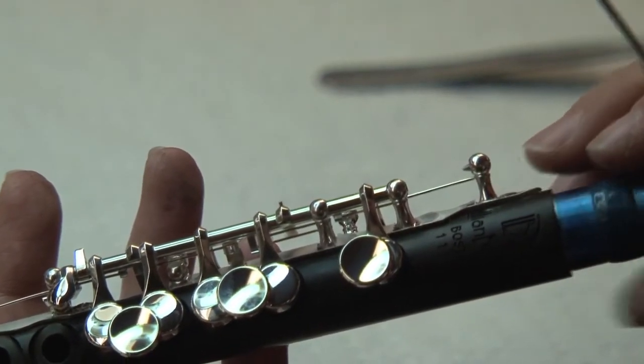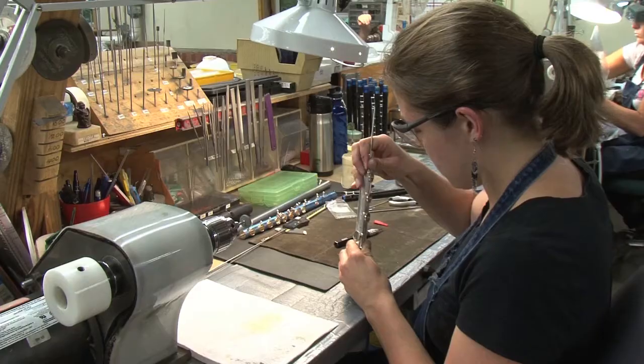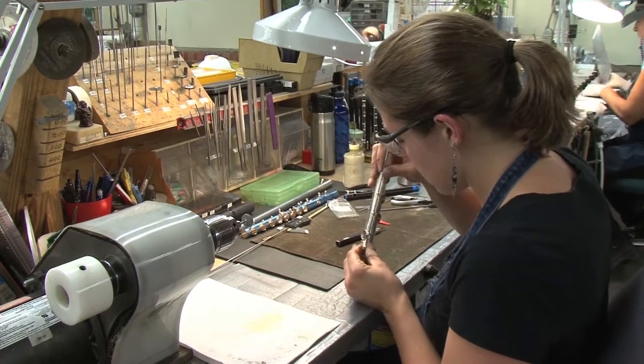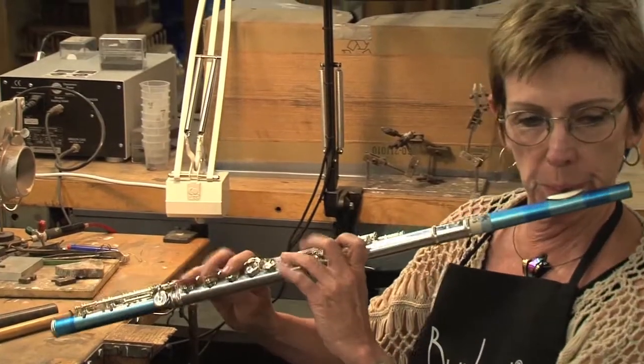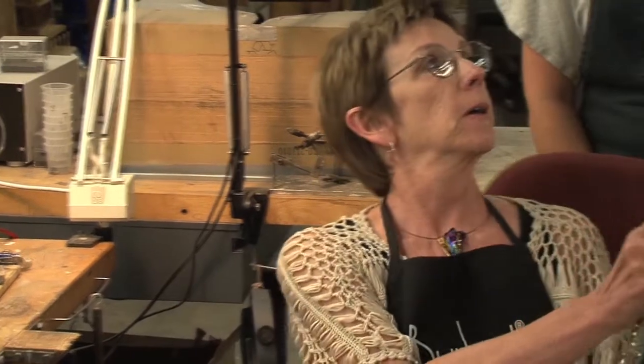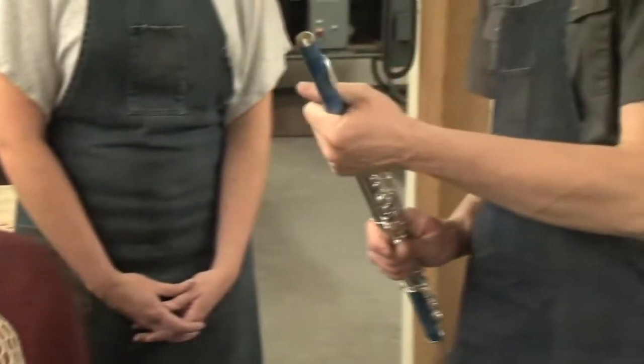Piccolos, grenadilla wood fitted with sterling silver keys. It is the handwork of many and devotion to quality that distinguishes these instruments in beauty and in sound. Follow me into the workshop to see how Burkhardt flutes are made.